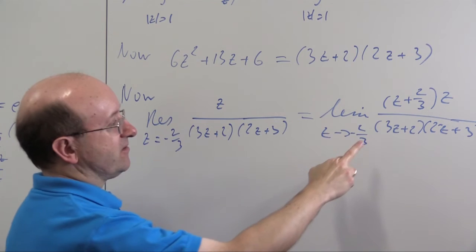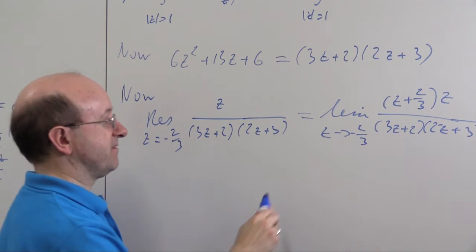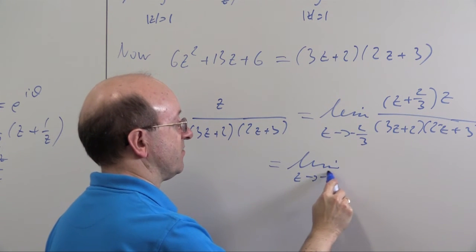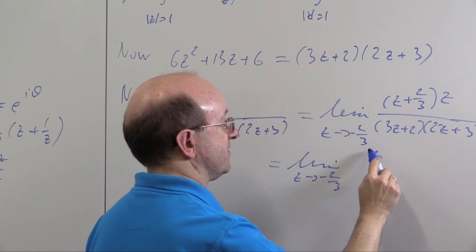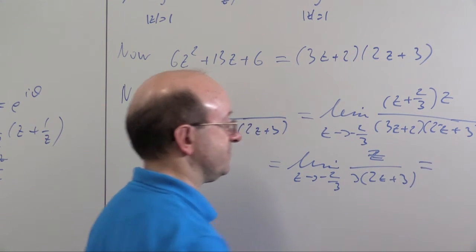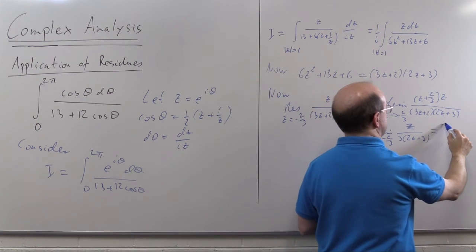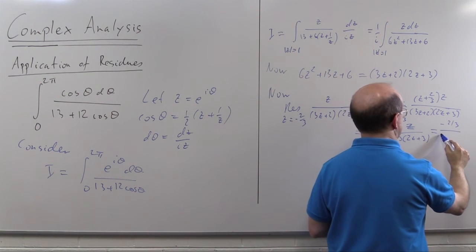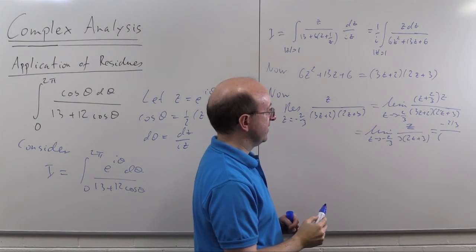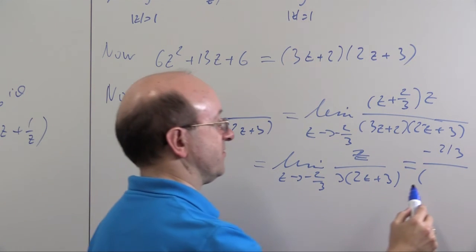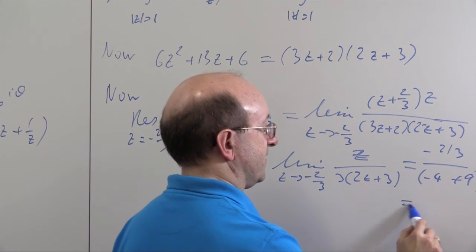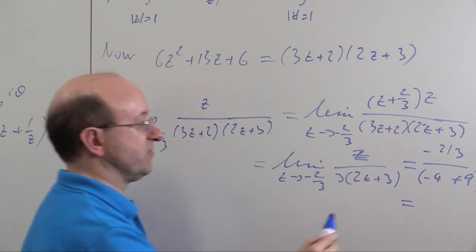In here though, all I need to do is now cancel off. There will be an extra factor of 3 left on the numerator, denominator here. So this is the limit as z goes to minus 2 thirds z over 3 into 2 z plus 3, which will be minus 2 thirds over, well I can think of that as 6 z plus 9 and 6 times minus 2 thirds of course it's going to give me a minus 4, so my residue is minus 2 over 15.